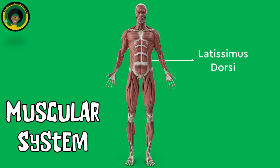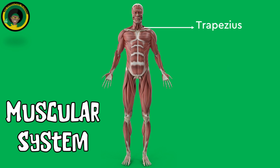Latissimus Dorsi, located in the back, allows for arm extension, adduction, and internal rotation. Trapezius, located in the upper back and neck, allows for shoulder and neck movements.